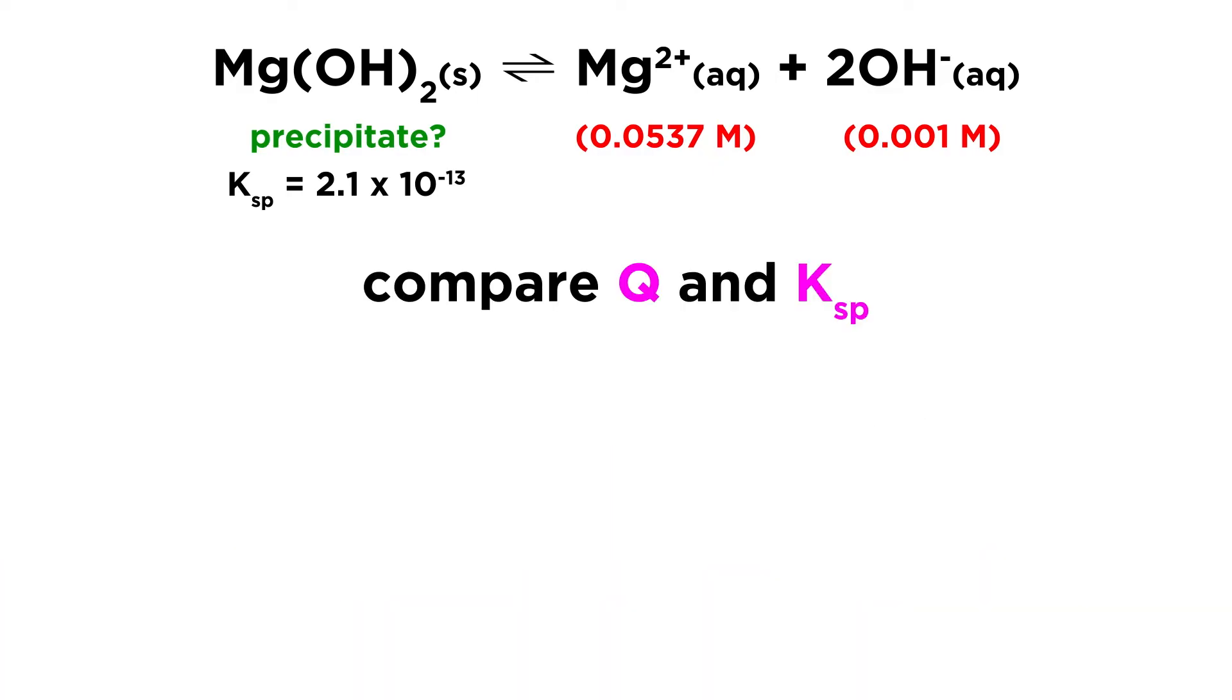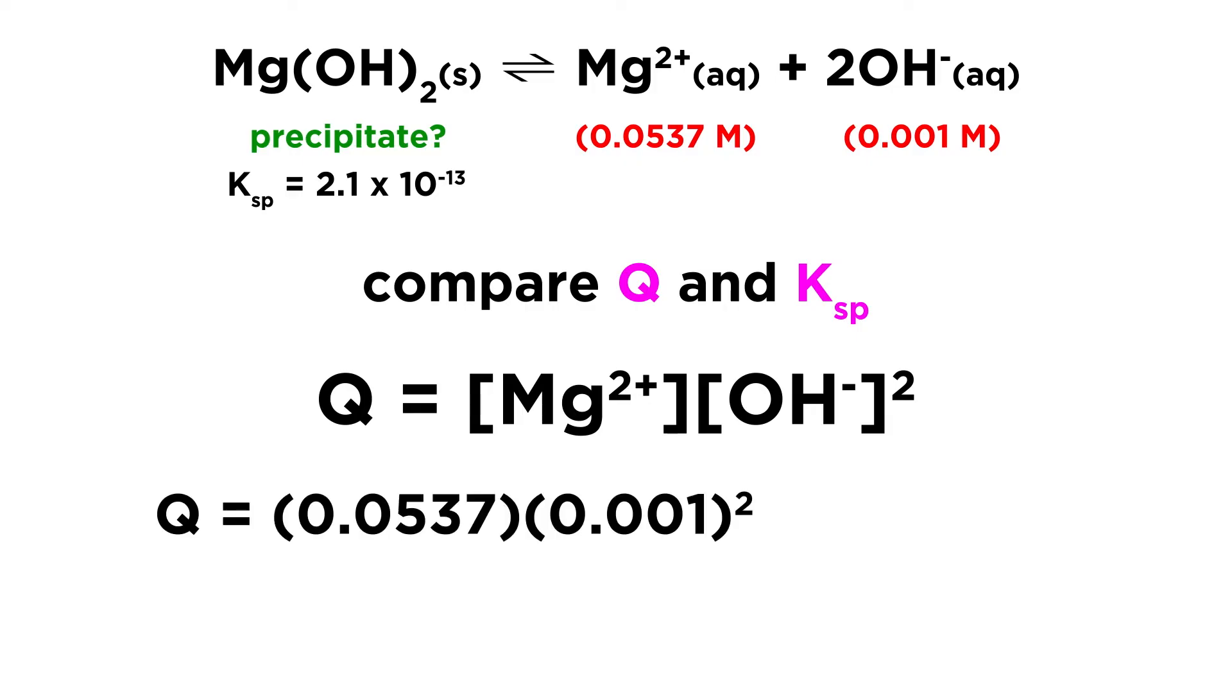As we said, we simply need to compare Q and Ksp, so let's calculate the reaction quotient Q. If Q is equal to magnesium ion concentration times hydroxide ion concentration squared, then plugging in those concentrations will give us a reaction quotient of 5.4 times 10 to the negative 8. This is significantly larger than Ksp, and we know that if Q is greater than K for any type of equilibrium, the equilibrium will shift left, in this case producing solid, thus precipitate will form until Q becomes equal to Ksp.